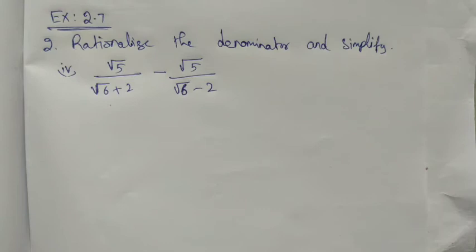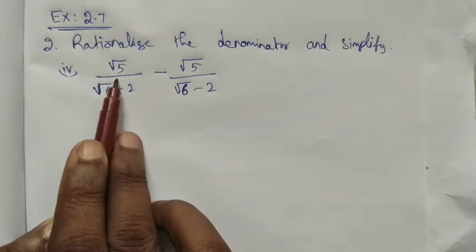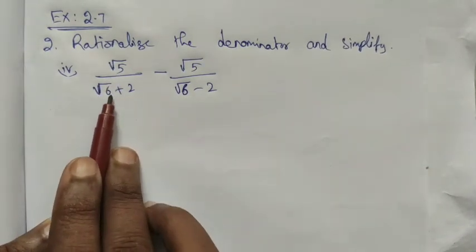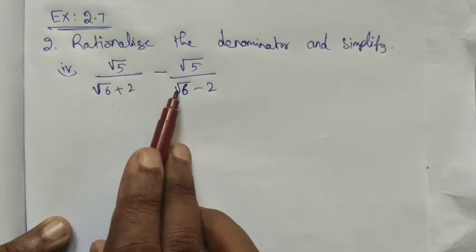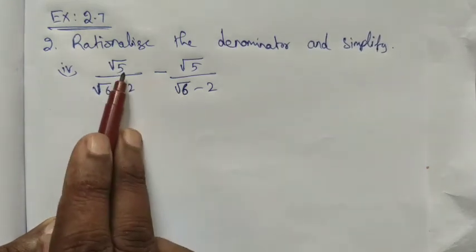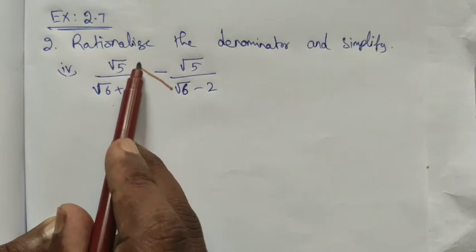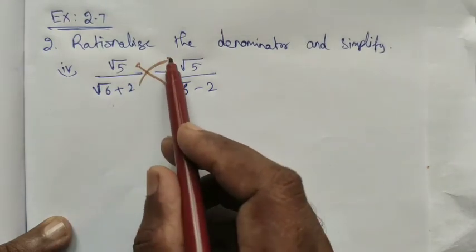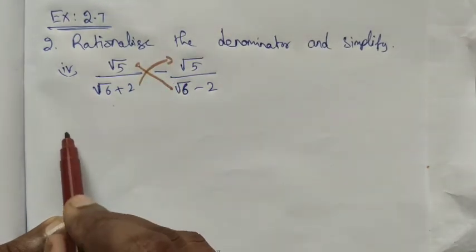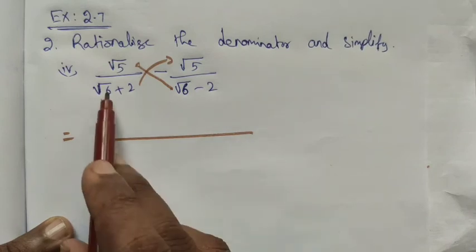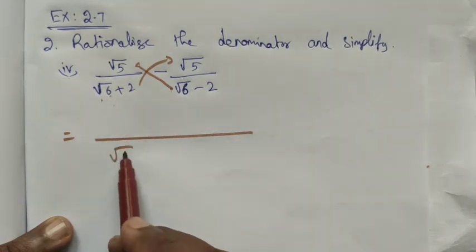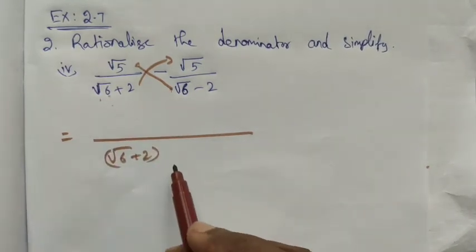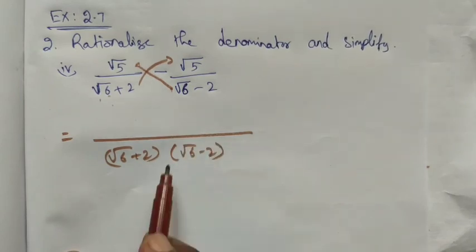Class 9, Exercise 2.7, Question 2: rationalize the denominator and simplify — Roman number 4. Here we have √5 / (√6 + 2). The denominator should be rationalized. We multiply by the conjugate: (√6 - 2) / (√6 - 2). So the denominator becomes (√6 + 2)(√6 - 2).